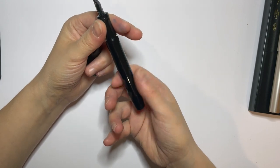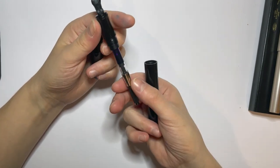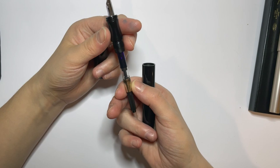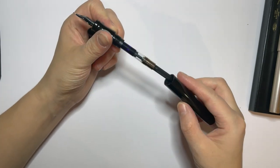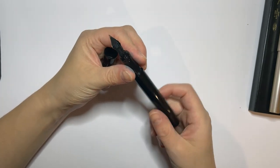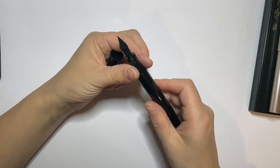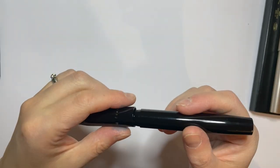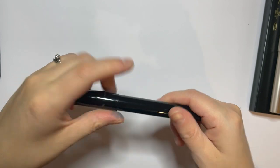Opening it up, it's just got a Franklin-Christoph converter in there. Super easy to fill. I'll just do a size comparison for you, and then we can jump into some writing samples.